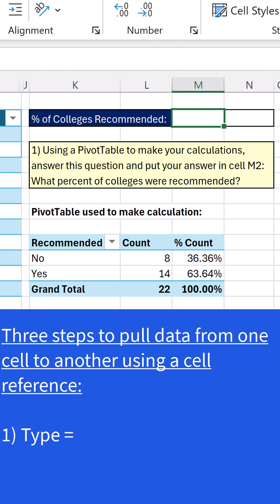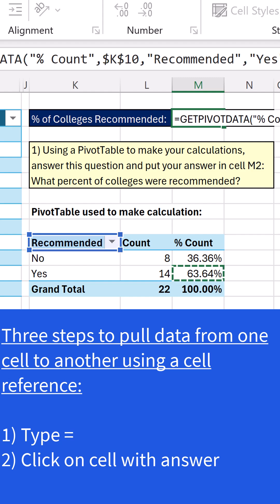there's three steps. Equal, step one. Click on the cell where the answer is calculated. That's step two. Step three, Enter.